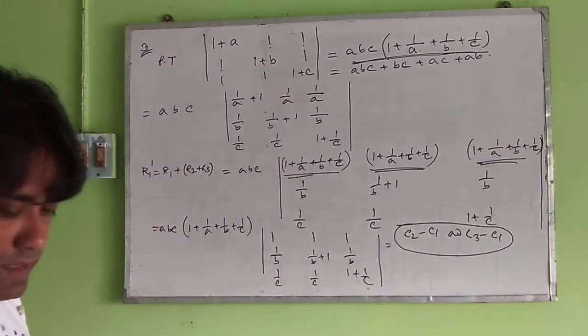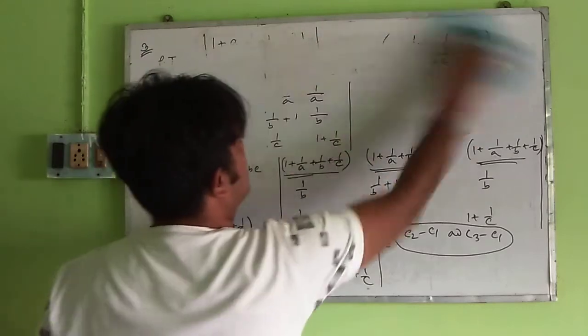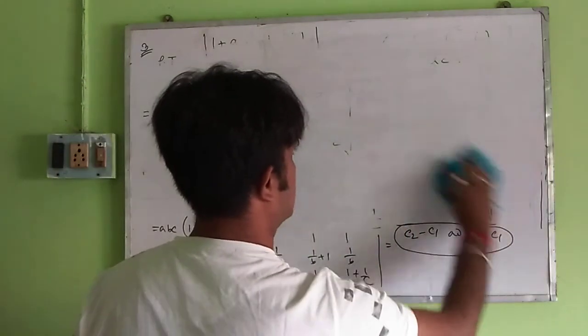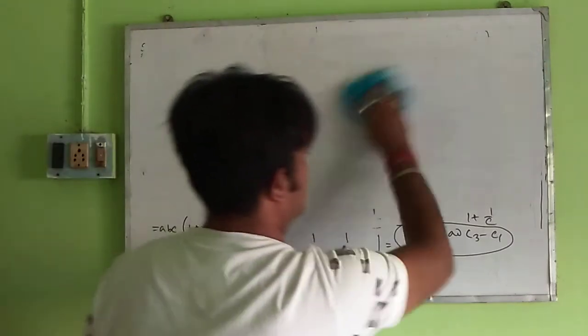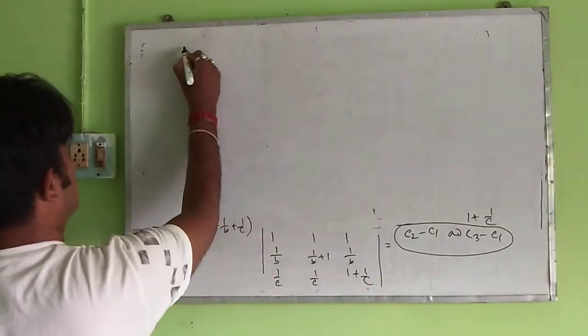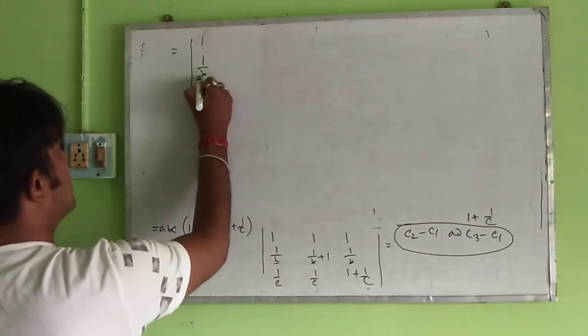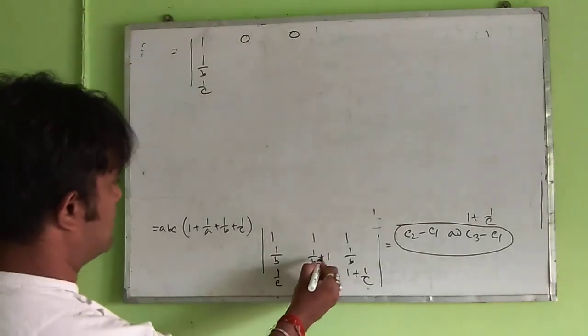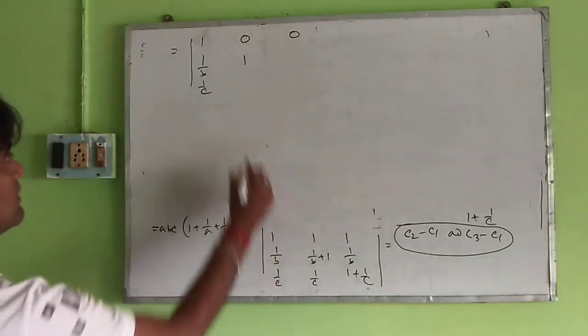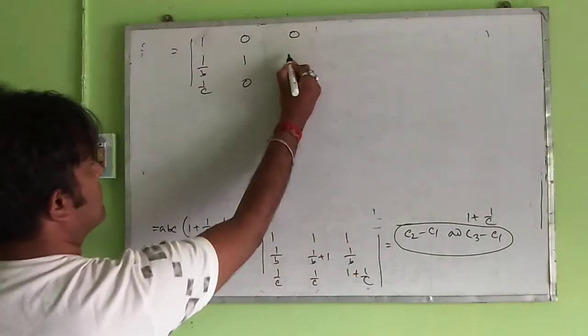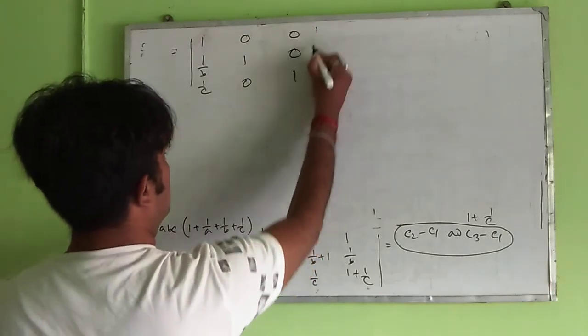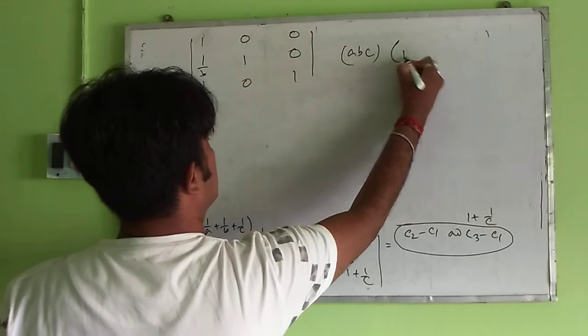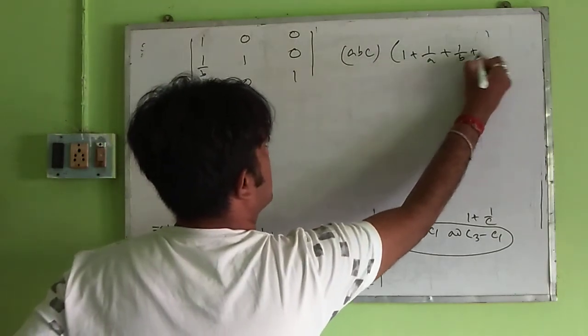If we do this operation, then what will come? This will be 0, and this will be 0. C2 minus C1, there is 1, there is 0. And this is ABC into 1 plus 1 by A plus 1 by B plus 1 by C.